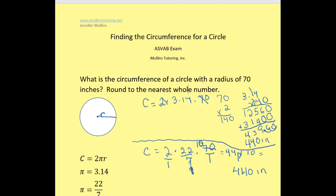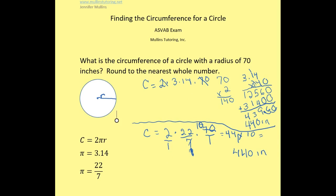So I still get the same answer whether I use the 3.14, because I have to round to the nearest whole number, or if I use the fraction. So I hope that this was helpful. And please make sure to check YouTube for my other videos for assistance on the ASVAB. Thank you for watching. Once again, this is Jennifer Mullins from Mullins Tutoring Incorporated.